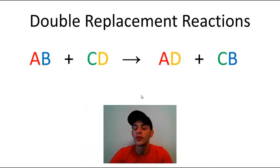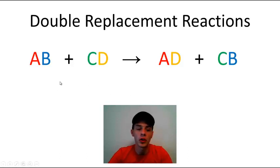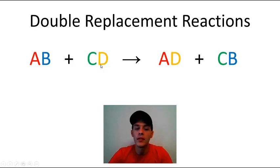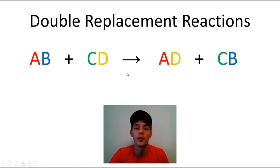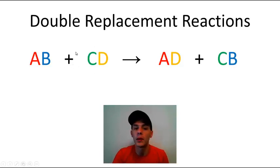Precipitation reactions are actually a type of double replacement reaction. Basically, the way a double replacement reaction works is you have two ionic compounds that we'll call AB and CD reacting together. A and C would be cations and B and D would be the anions. The ions basically swap partners — cation A pairs up with anion D, and cation C pairs up with anion B.